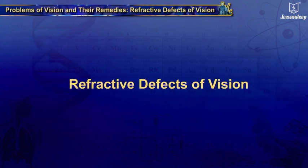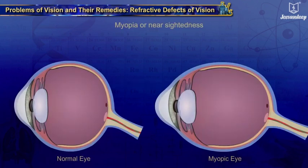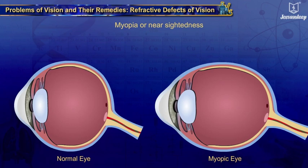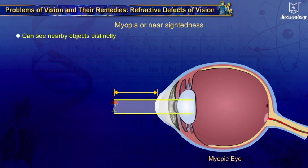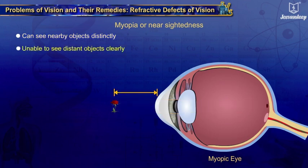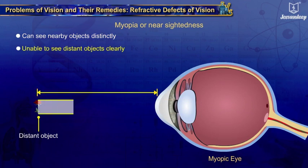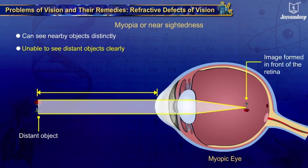Refractive Defects of Vision. 1. Myopia or Nearsightedness. Myopia or Nearsightedness is the defect of vision in which a human eye can see nearby objects distinctly but is unable to see distant objects clearly. In this case, the image of a distant object is formed in front of the retina instead of on the retina, due to too much convergence of parallel light rays.